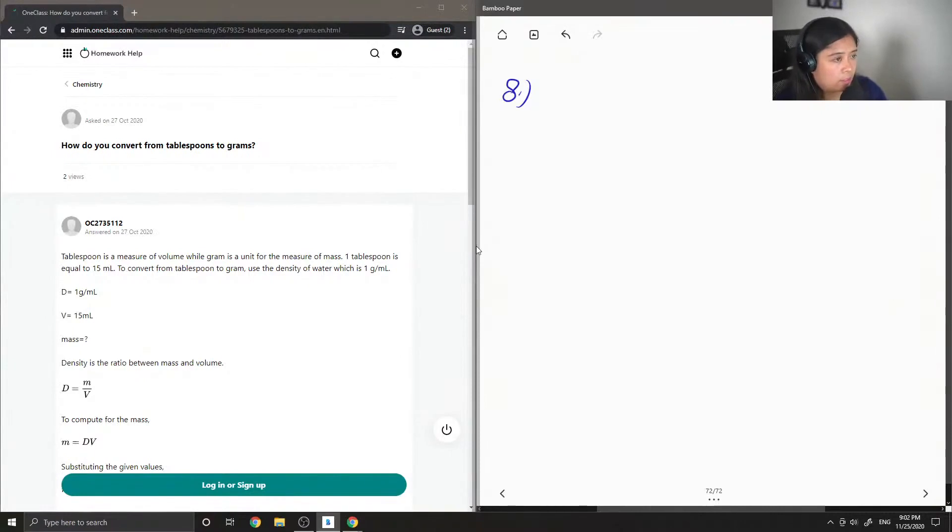Generally, one tablespoon is equal to 15 grams.